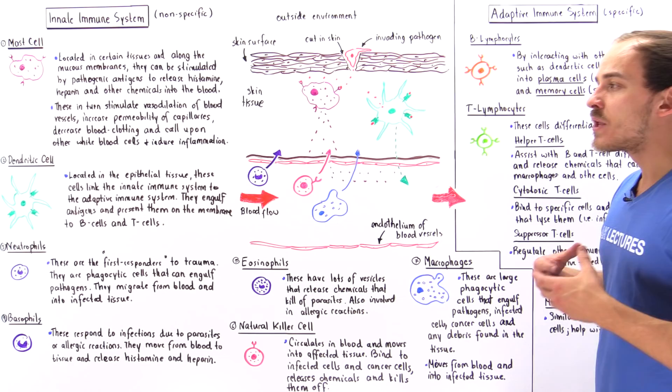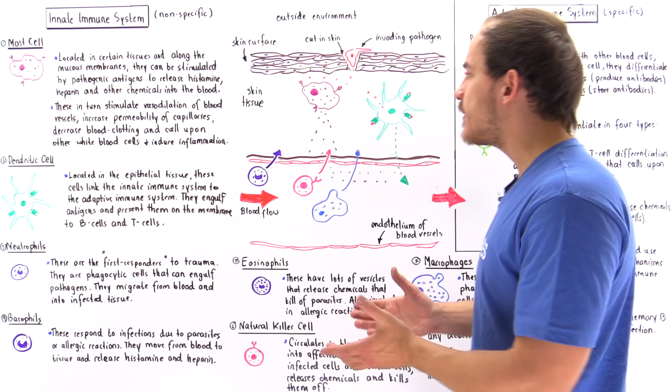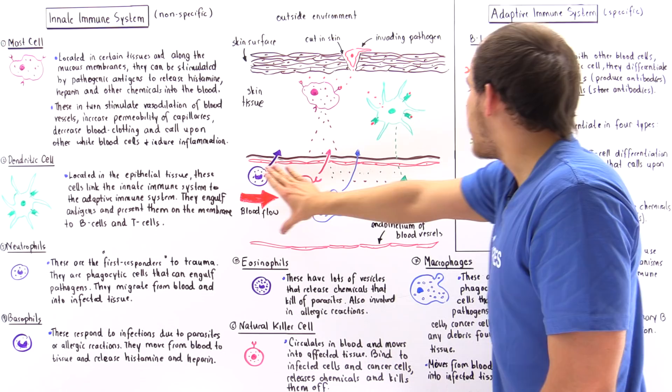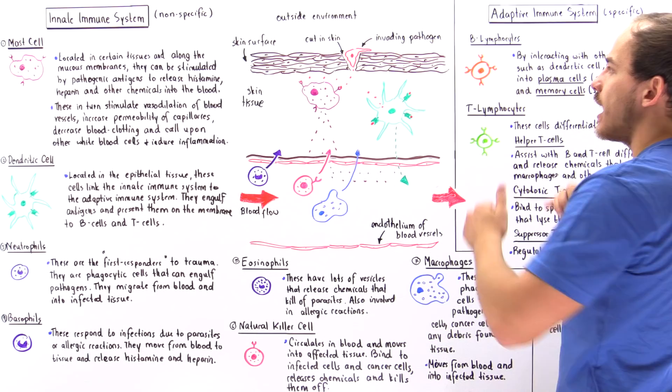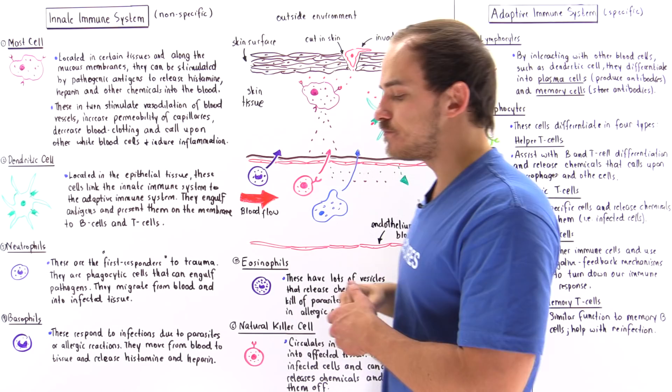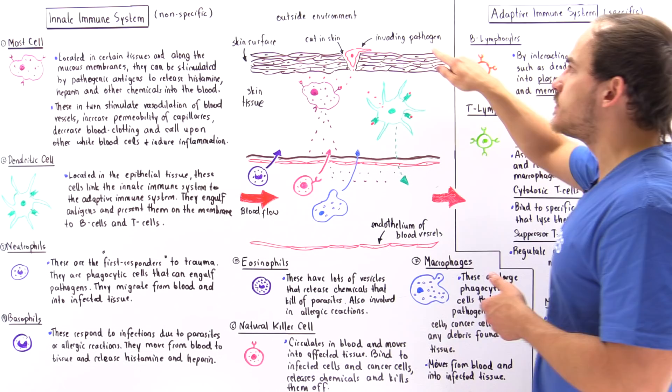Let's begin by imagining the following scenario. Let's suppose we have the surface of our skin as shown in the diagram, then we have the skin tissue, and below that we have our blood vessel that carries our blood plasma. Now let's imagine that we have some type of cut that is formed on the surface of our skin, and in close proximity to our cut, we have some type of pathogen.